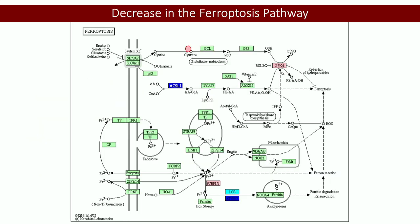We looked at ferroptosis — a cell death pathway triggered by decreased glutathione levels and increased oxidative stress, in which we have a long-standing interest. Some of the key markers that drive ferroptosis were downregulated, and GPX4 — which is involved in glutathione recycling — was upregulated, which we think is good because it helps inhibit ferroptosis.